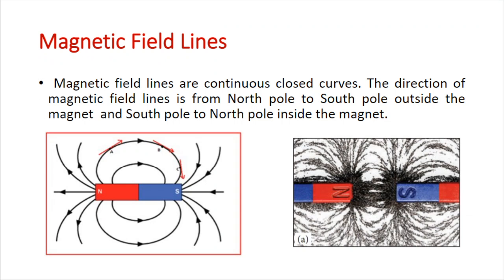In the magnetic region, we define magnetic field lines. Magnetic field lines are continuous closed curves. Outside the magnet, the magnetic field lines are directed from north to south. Inside the magnet, the direction is from south to north.